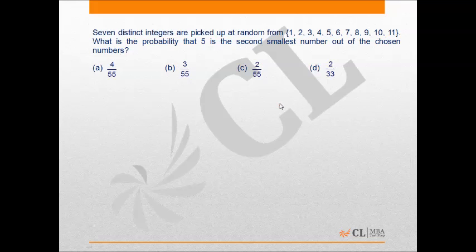This can be done in 4C1 ways. And we have to select the remaining five numbers, excluding 5 and the number which is less than 5, out of the last six natural numbers. This can be done in 6C5 ways.